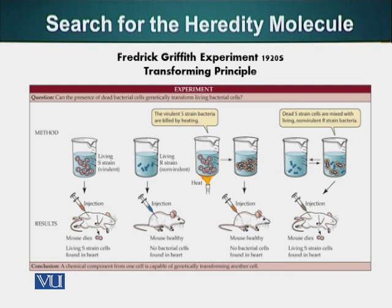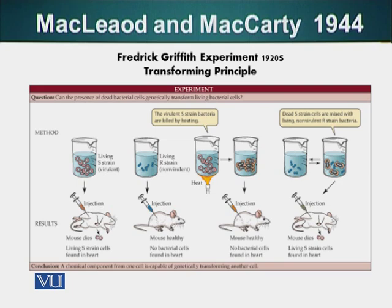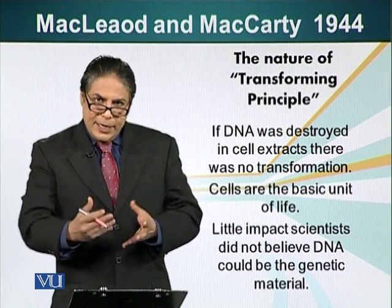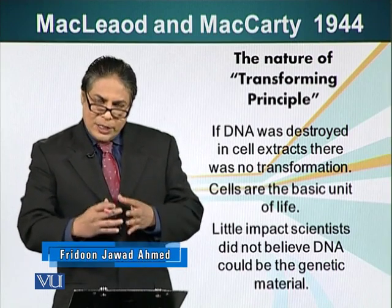Next, scientists identified the individual components of the bacteria — the polymers: lipids, carbohydrates, nucleic acids, and proteins. They used chemicals that could destroy each of these polymers one at a time. Each time they did this experiment, they found that if you destroyed carbohydrates, lipids, or proteins but left the DNA intact, the transformation of R bacteria into S bacteria still occurred. This showed that DNA is the molecule with the ability to transform R cells into S cells, although this work was largely ignored at the time.